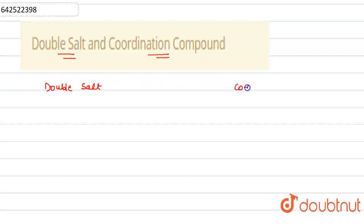Basically, both the double salt and coordination compounds are made by combination of two or more metals. In double salt, two simple salts combine with each other to form compound.